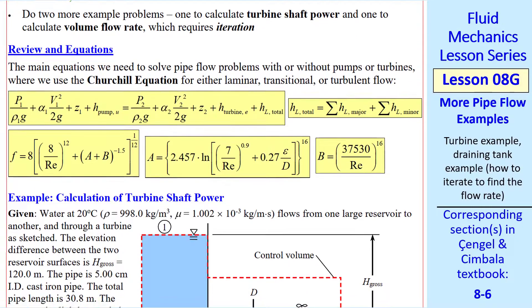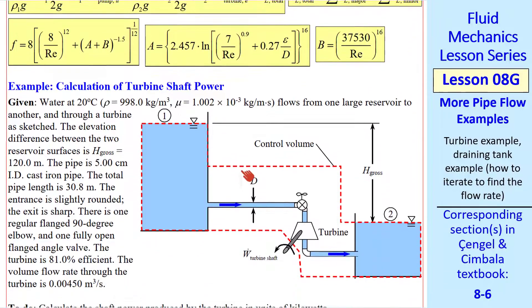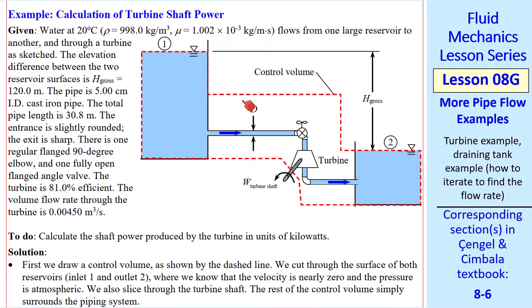For a quick review, these are the main equations that we need for all these kinds of problems: the Churchill equation, the energy equation in head form, and this equation for summing the major and minor losses. In our first example we calculate turbine shaft power.